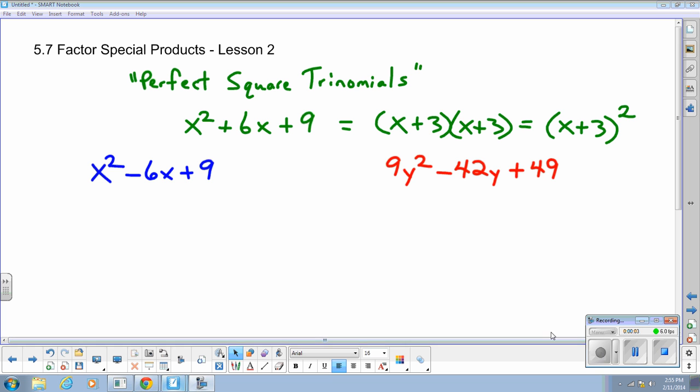In the first lesson for 5.7 Factor Special Products, I introduced you to the phrase perfect square trinomials, and we discussed that in a perfect square trinomial, the first term and the third term are perfect squares.